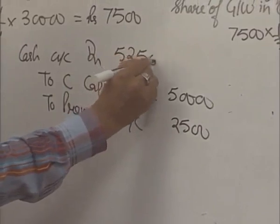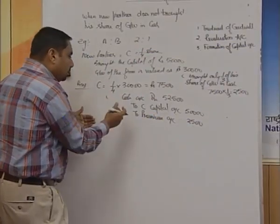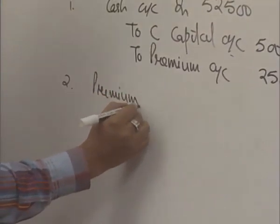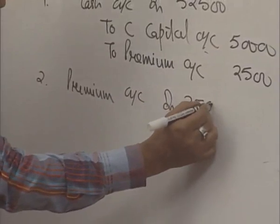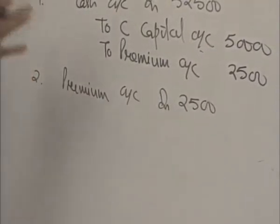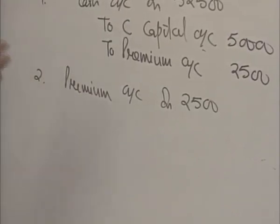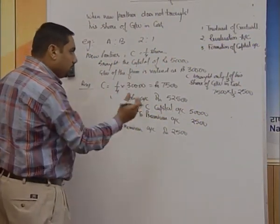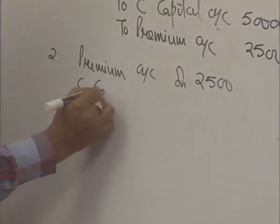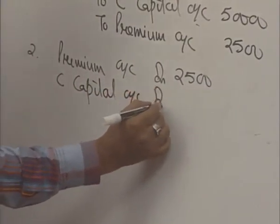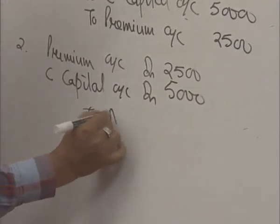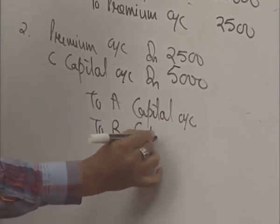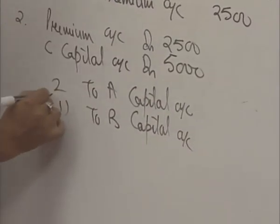Under this situation, the first entry is: Cash Account debit to C Capital Account, to Premium Account. Premium is the value of goodwill brought by C — 2,500. Capital is 50,000. Total cash comes out to be 52,500. The next entry is for distribution. The premium brought is 2,500, and the remaining 5,000 not brought by C is taken from his capital. So the second entry is: C Capital Account debit — 5,000 — and the total amount is distributed among A and B's capital in sacrificing ratio 2:1.